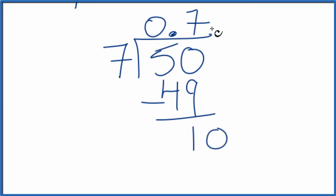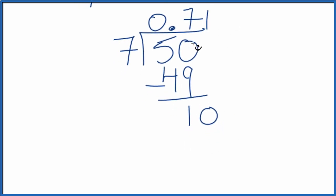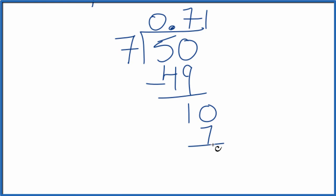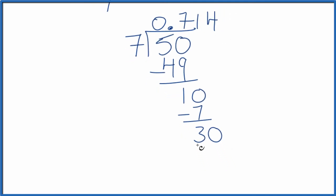50 minus 49 is 1. Let's call it 10 and move over here. 1 times 7 that gives us 7. So now we have 3. Call this 30. Move over 1.